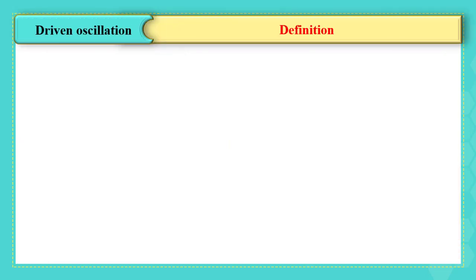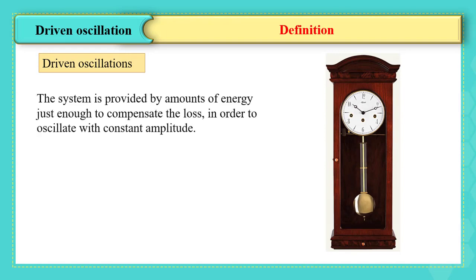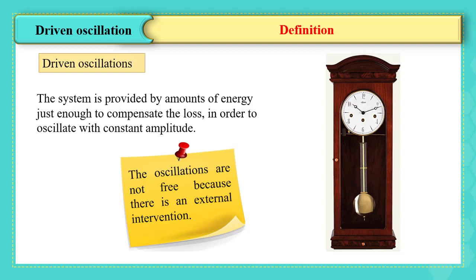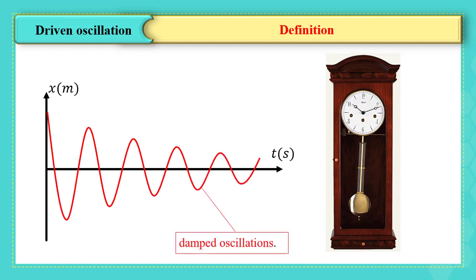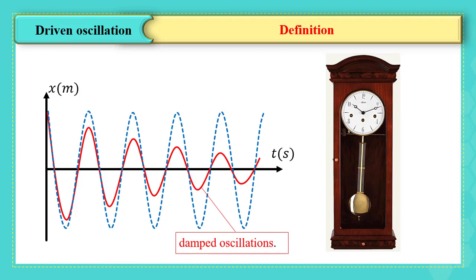Driven oscillations. The system is considered driven when it is provided by amounts of energy just enough to compensate the loss in order to oscillate with constant amplitude. The oscillations are not free because there is an external intervention. The clock pendulum without the electric battery performs free damped oscillations because of the resistance of the air and the friction with its axis of rotation. For this reason, the engine battery system is used to maintain the oscillations to compensate for the loss of energy dissipated. The system then is called exciter.